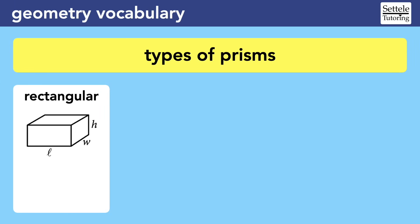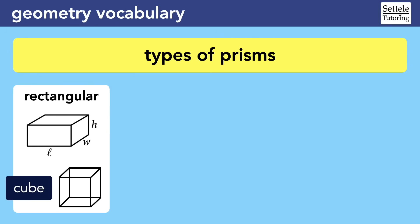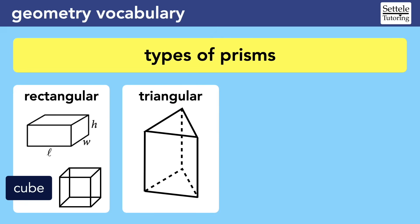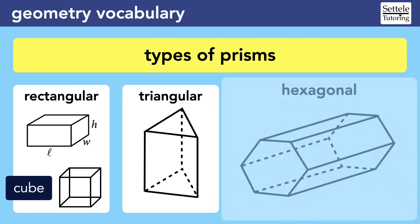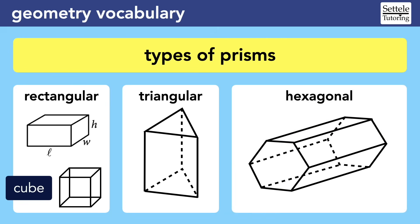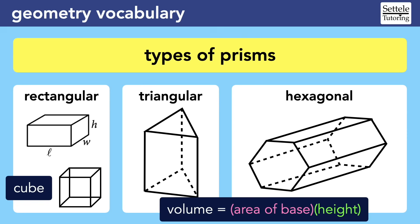Almost every prism you'll work with on the SAT is going to be a rectangular prism, but don't forget that a cube is a special type of rectangular prism where the length, width, and height are all the same. Like with the square and rectangle, if the SAT asks you to invent your own rectangular prism, it's probably easiest to imagine a cube so that all dimensions are equivalent. It's possible you could get a hard SAT question about other types of prisms — a triangular prism has bases that are triangles, and a hexagonal prism has two hexagons connected by a bunch of rectangles. The volume of any prism can be found by finding the area of the base and multiplying by the height.